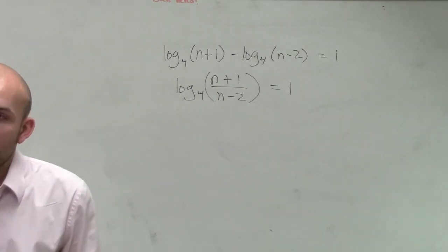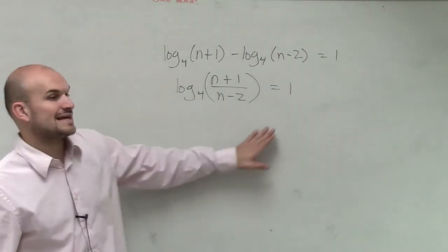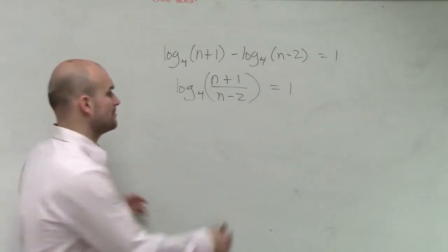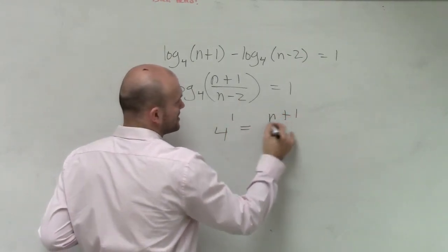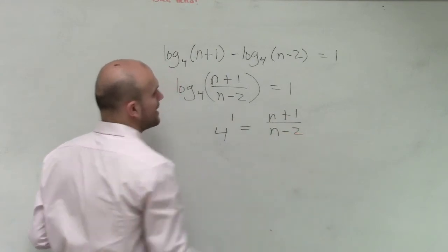Now that I have one simple logarithm, now what I can do is rewrite this in exponential form, which states 4 to the first power equals n plus 1 over n minus 2.